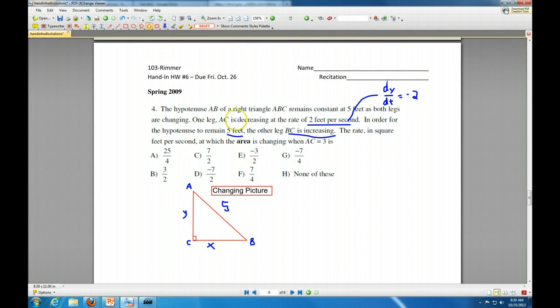We have X squared plus Y squared is 25. And so we'll have 2X dX/dt plus 2Y dY/dt is equal to 0. We know dY/dt is negative 2. And we want to know what dX/dt is. We know dY/dt is negative 2, but we don't know dX/dt.